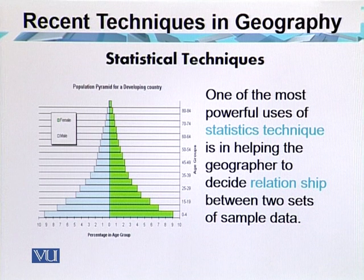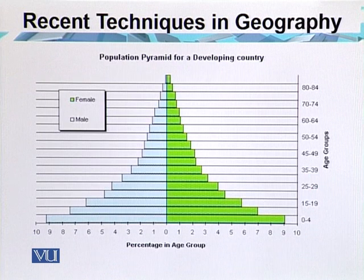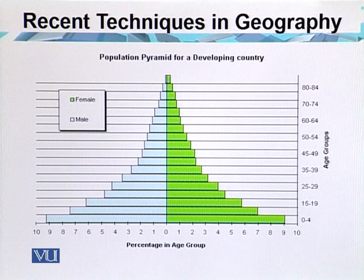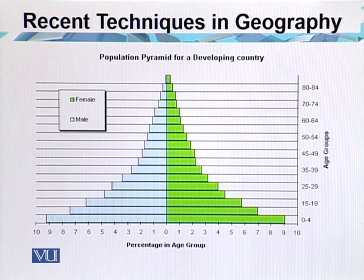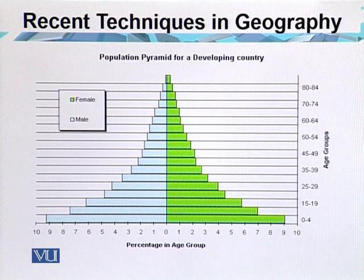One of the most powerful uses of the statistical technique is in helping the geographer to decide the relationship between two sets of sample data. This slide shows the population pyramid of a developing country, which represents not only the male-female ratio but also the age group structure of the population.